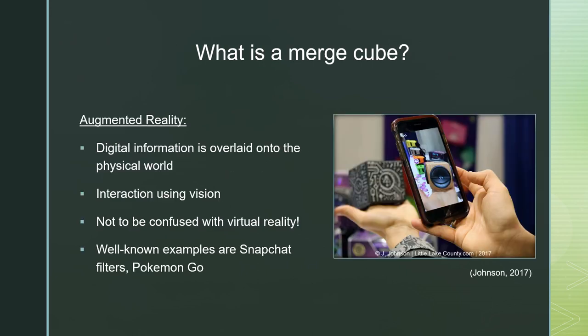The first thing you need to know about the Merge Cube is that it uses augmented reality — that's when digital information is inserted or overlaid into the real world. Sometimes people get confused between augmented reality and virtual reality, however there is a big difference between the two. Augmented reality is when digital elements are added to the real world, the world that we see, and virtual reality is a much more immersive experience. Usually you'll be wearing a set of goggles and as you look through them all you'll see is the virtual world.